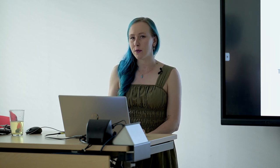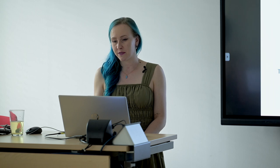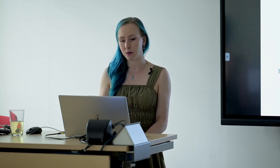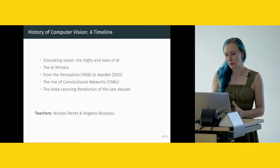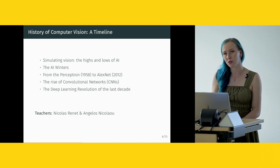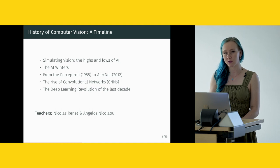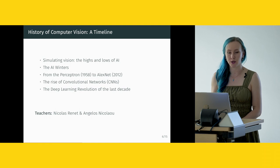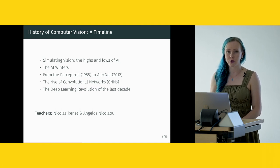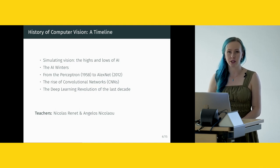The next session will give a historical overview of computer vision, called History of Computer Vision: A Timeline, taught by Nicolas René. Topics include simulating vision, the highs and lows of AI, the AI winters, and a historical overview from the perceptron in 1958 to AlexNet in 2012 — a major turning point. We will talk about the rise of convolutional networks (CNNs) and the deep learning revolution of the last decade.